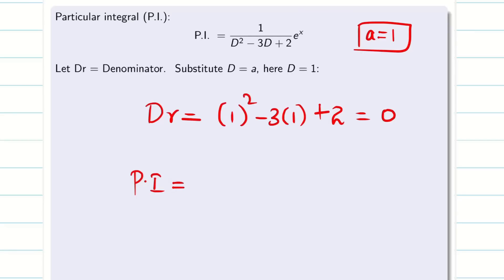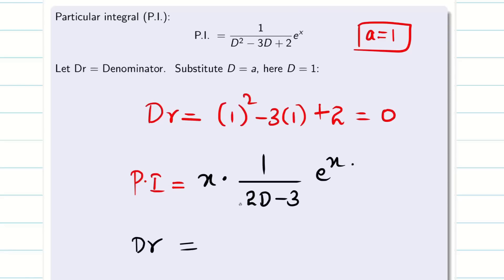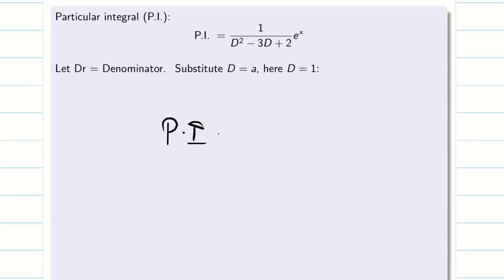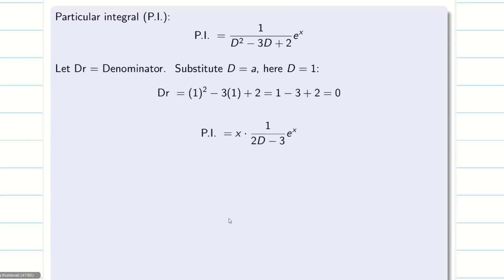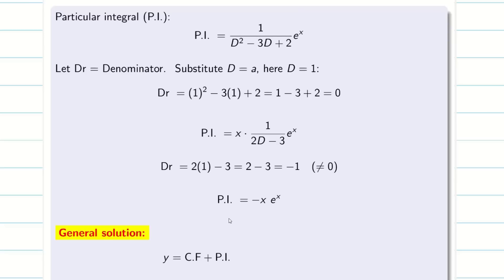When the denominator is zero, pre-multiply by x and differentiate the denominator alone with respect to D, giving 2D − 3. Now evaluate at D = 1: 2(1) − 3 = −1, which is non-zero. Therefore PI = x · (1/−1) · e^x = −xe^x. The general solution is y = Ae^x + Be^(2x) − xe^x.